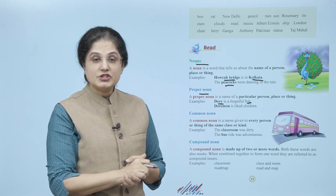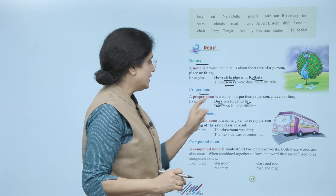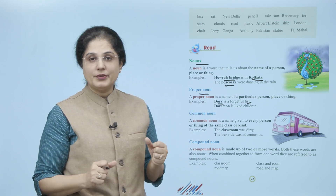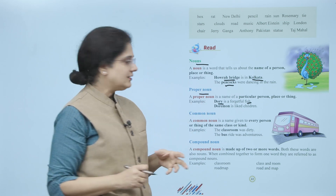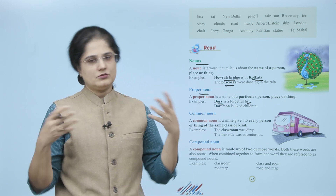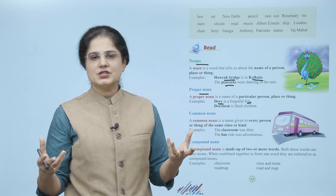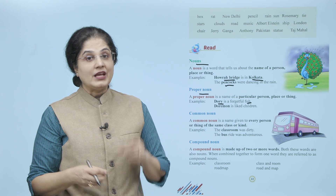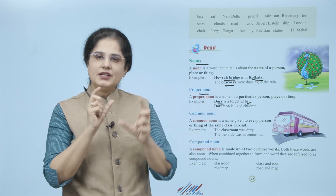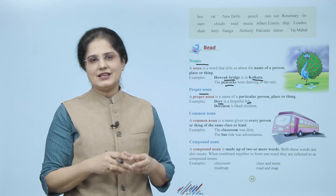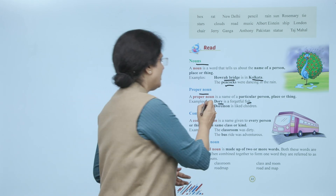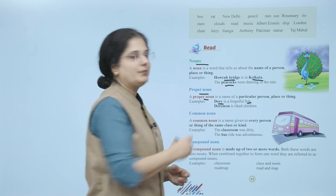To yeh jo word hai na hamaara — Dory — yeh fish kya hai, yeh bhi noun hai. Lekin is fish ka, particular fish ka naam kya hai? Dory. To yeh Dory kya ho gaya — yeh ho gaya hamaara proper noun. Isi tarah se children kya hai — children koi bhi bachche ho sakti hain, to yeh bhi noun hai. Lekin Doraemon kya hai — kisi ek particular cheez ka naam hai, to yeh hamaara proper noun ho gaya.